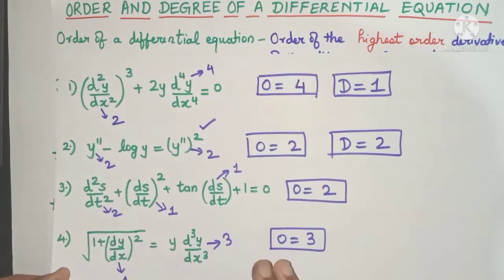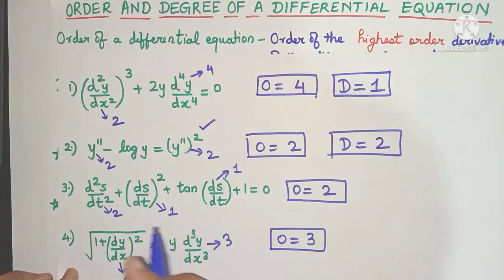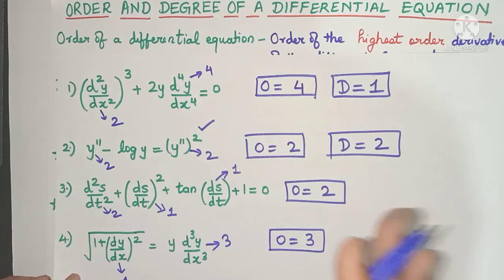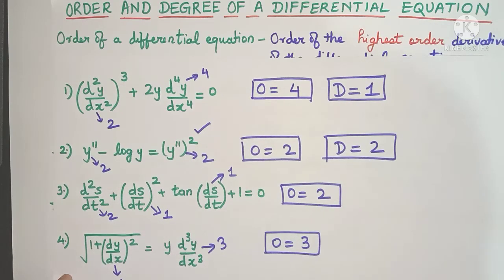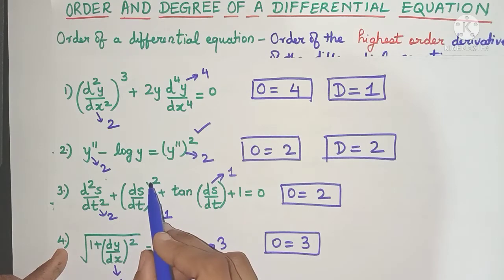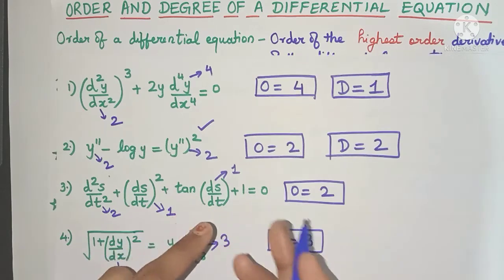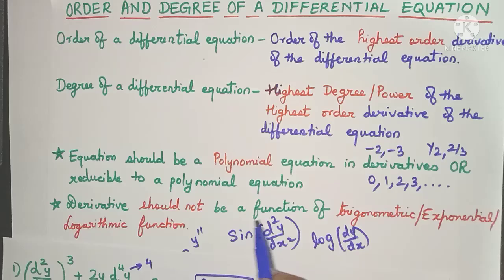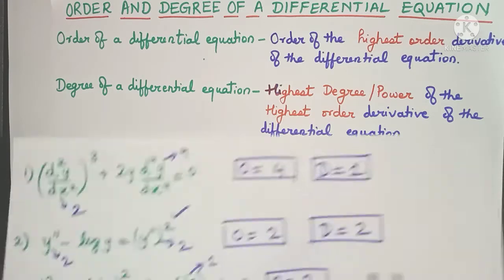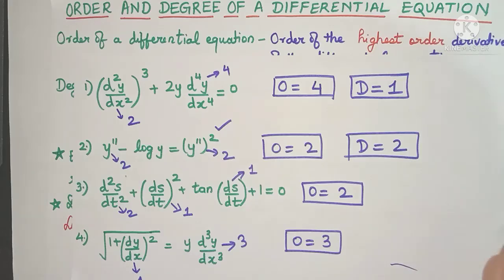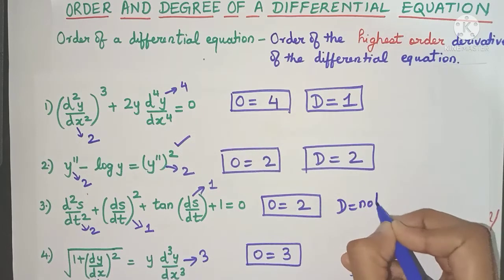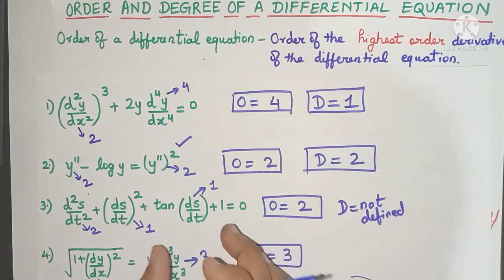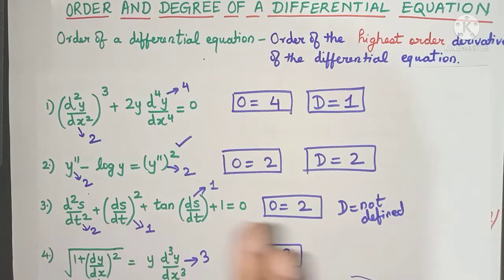In the next differential equation, the highest order is clearly 2, but we must check if it's a polynomial. One derivative has power 1 and another has power 2, but one derivative is inside a trigonometric function. Since the derivative appears inside a trig function, this is not a polynomial equation, and therefore the degree is not defined for this equation.